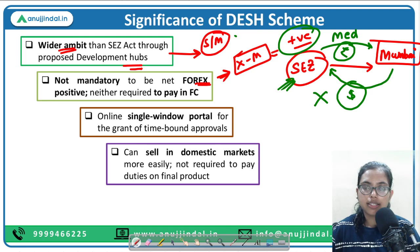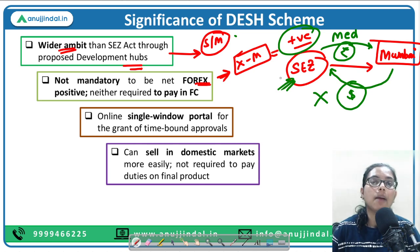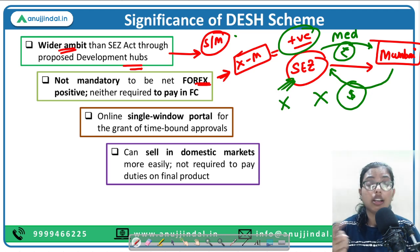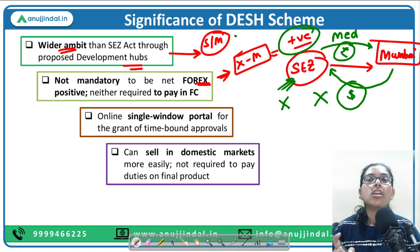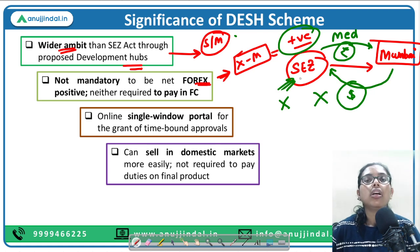This is a major incentive. Previously, businessmen purchasing from SEZs had to buy dollars, which put pressure on the rupee. Now, with direct rupee transactions, that pressure is eliminated. You can easily do transactions directly in rupees.